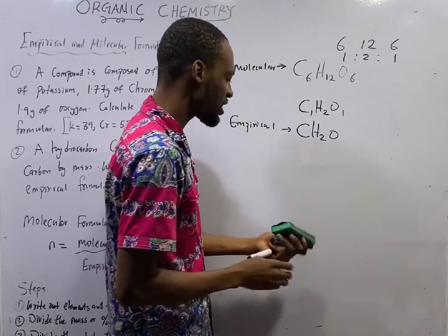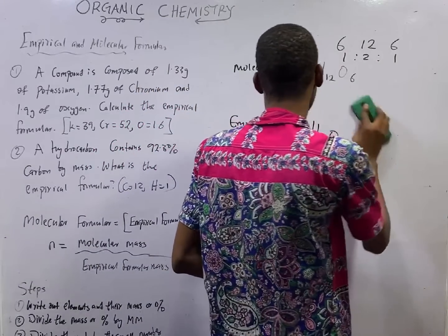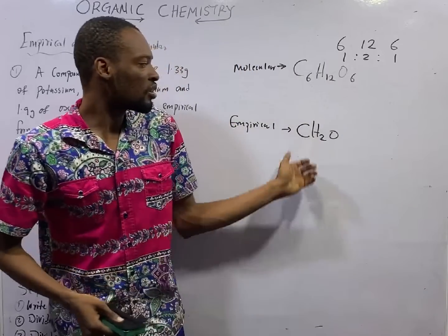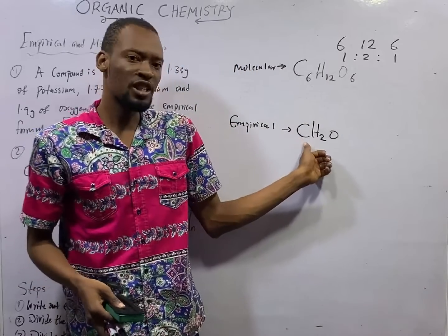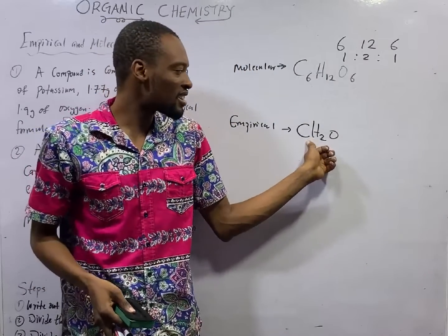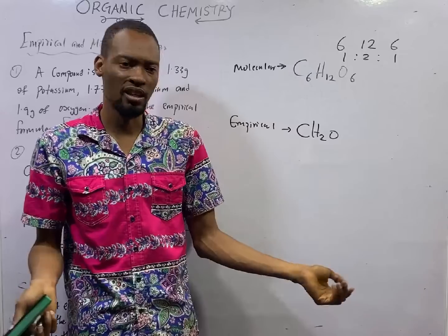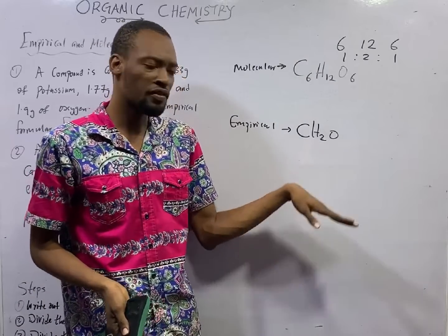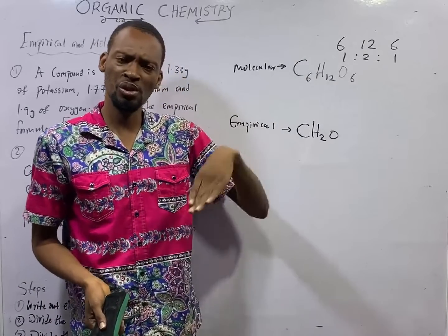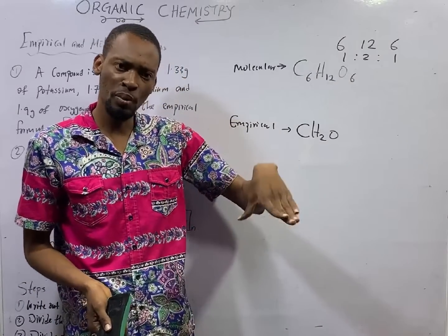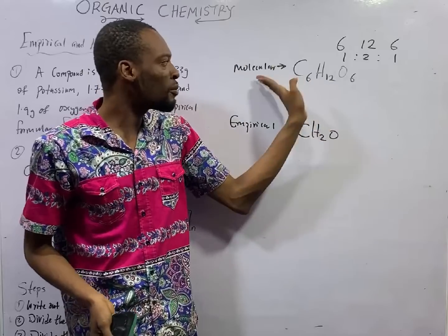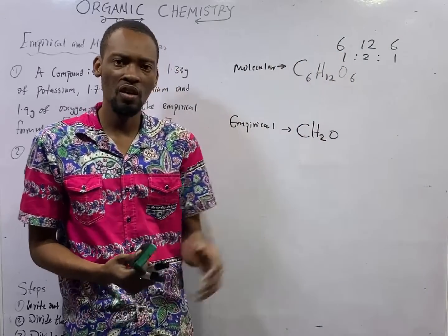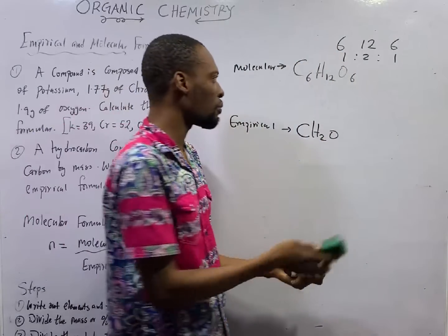If you have a past question that says glucose expressed as CH2O — which is the simplest formula — it is definitely the empirical formula. It shows the simplest whole number, not the actual molecular formula of the compound.